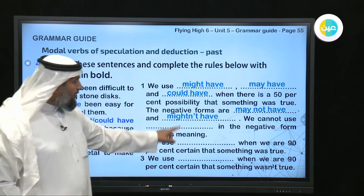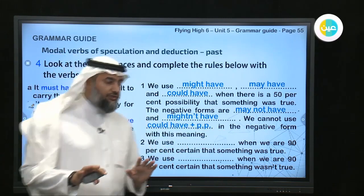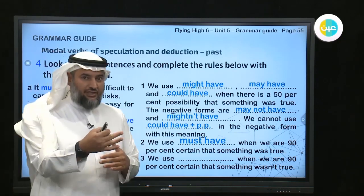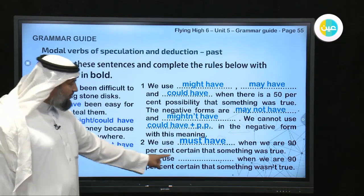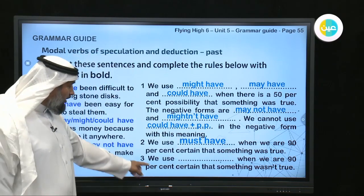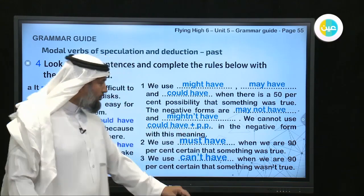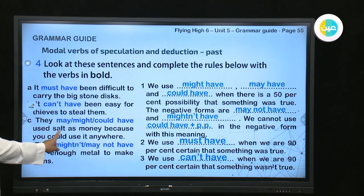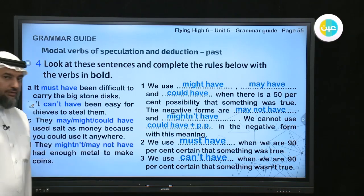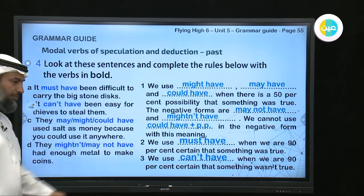The negative forms are 'might not have' or 'may not have' — or 'mightn't have.' We don't use 'couldn't have' in the negative in the same way. If you are 90% certain that something was true, you use 'must have.' We use 'can't have' when we are 90% sure that something was NOT true. For example: 'They may have or might have or could have used salt as money.' And: 'They mightn't have had enough metal to make coins.'